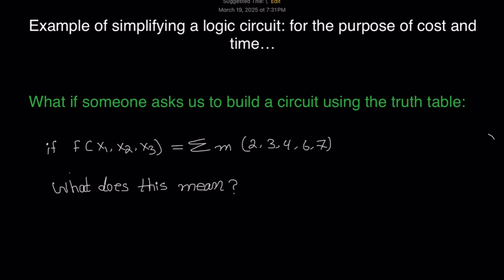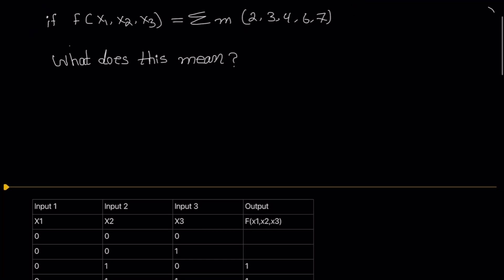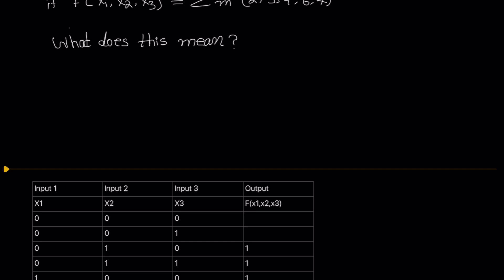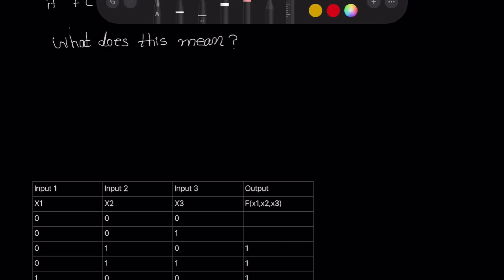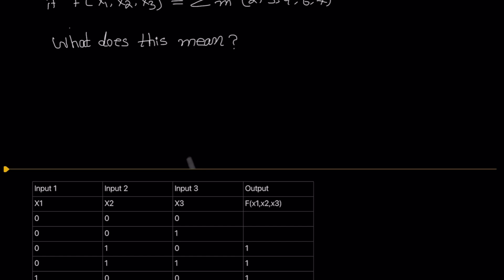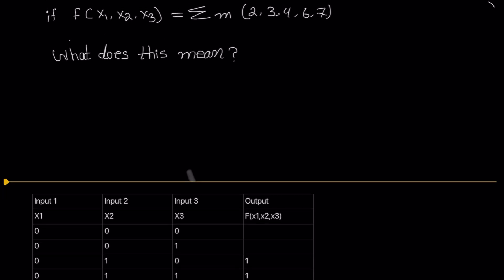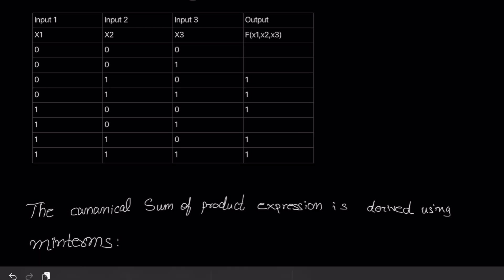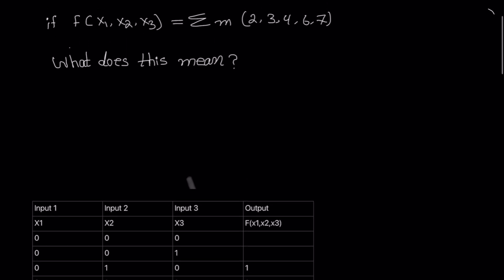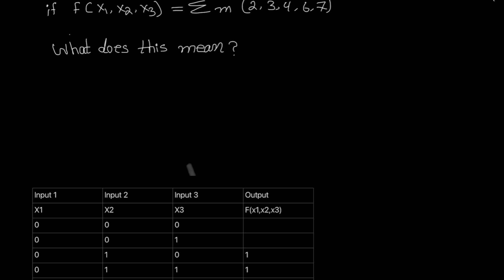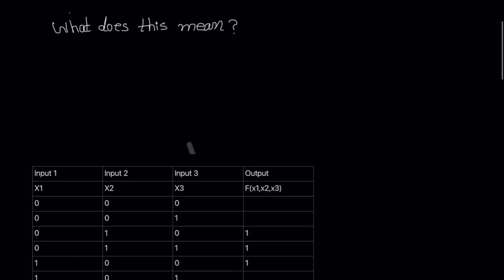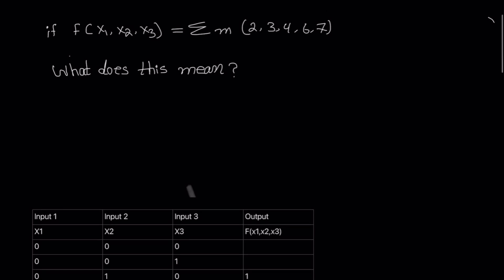To further simplify this: input one, input two, and input three are our inputs, and this is our output. The function is asking that for the summation of min terms, we will have output one — logically true — for min terms two, three, four, six, and seven. Whatever is not listed will have output zero.